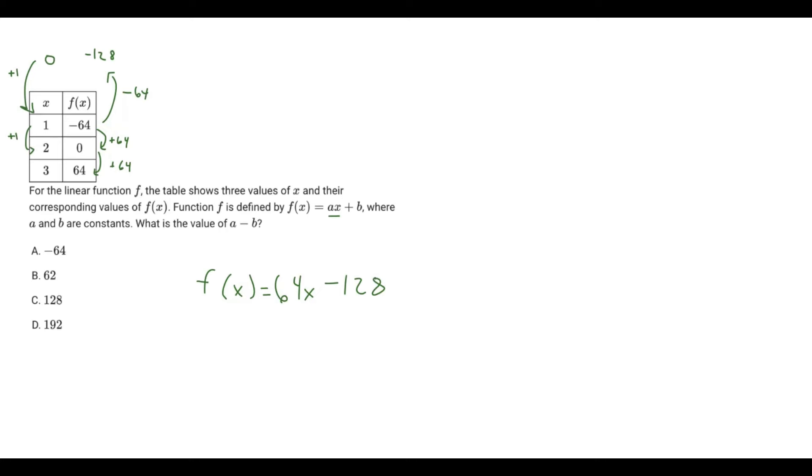So it says what is the value of a minus b? The a value is 64, and it's subtracting the b value. The b value is negative 128. So if you subtract a negative number, we're essentially adding it, and 64 plus 128 is just 192. So that's our final answer.